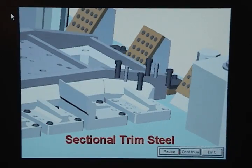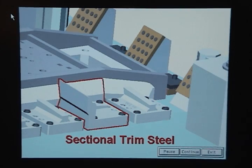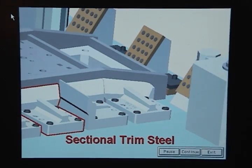Sectional trim steels are mounted to the die, and one or more trim steel sections are used to construct the trim line.